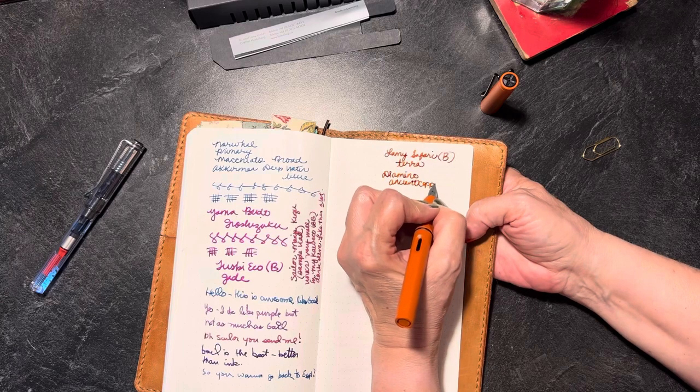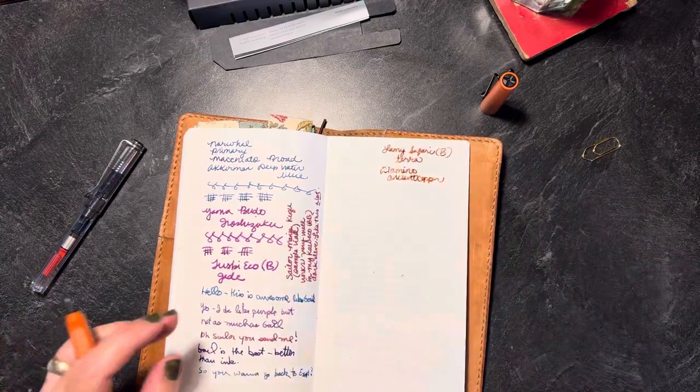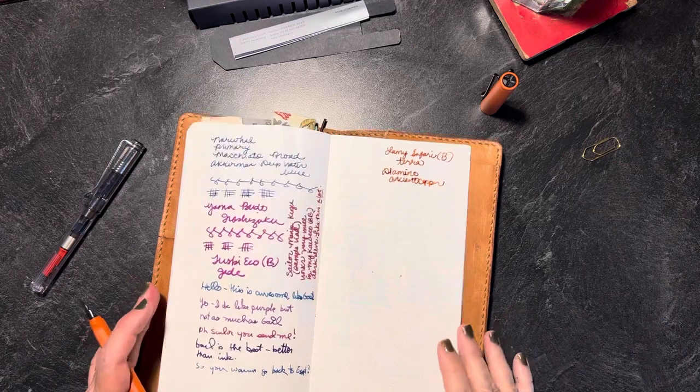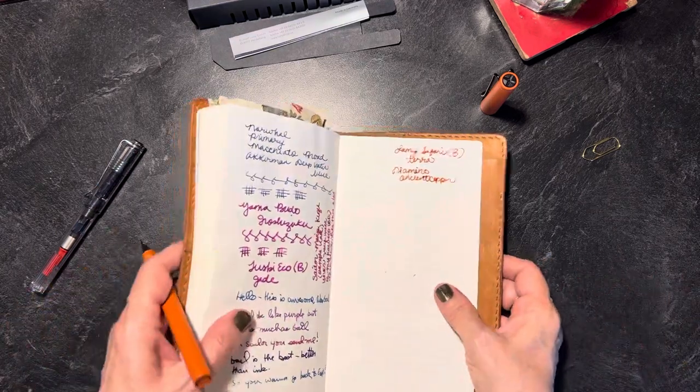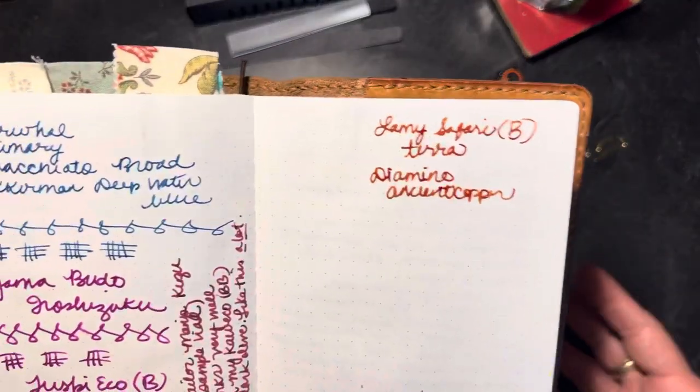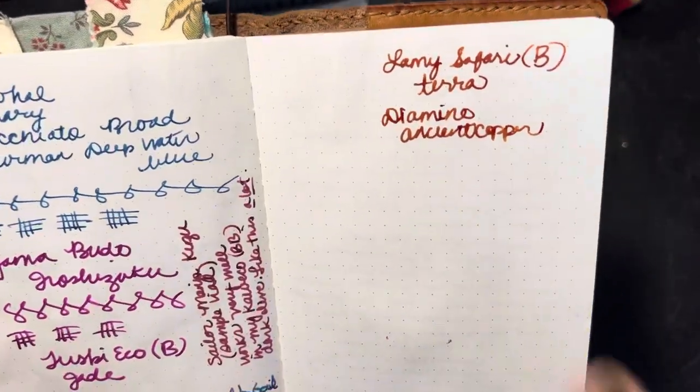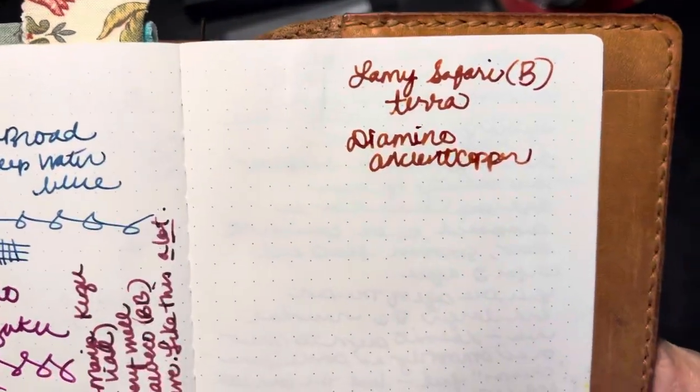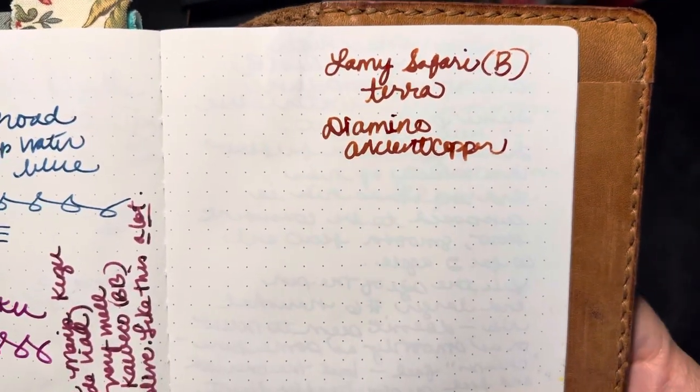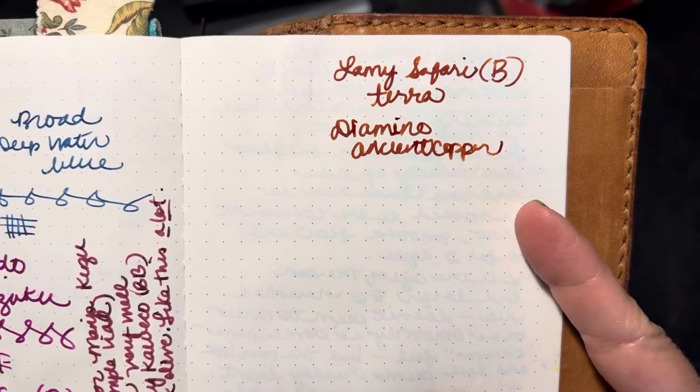It's funny how people like things and don't like things. I was watching Helden Rites and she was saying how she tolerates the ancient diamine because she doesn't really like browns. And I don't know if I'm big on browns per se with fountain pen inks, but I don't even consider this brown. I just consider this wonderful. So Lamy Safari Terra, Diamine Ancient Copper.